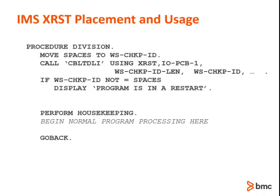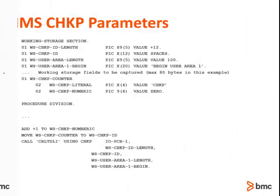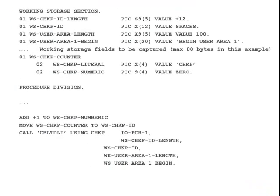A restart is indicated by a non-blank value in the checkpoint ID. In the example shown here, the program simply puts out a message when the XRST call returns a non-blank value in WS Checkpoint ID. Now let's look at the COBOL coding example for a checkpoint call. The checkpoint ID is assigned by the program and typically consists of a literal concatenated to a numeric counter. In this example, the first checkpoint ID would be checkpoint0001, while the next would be checkpoint0002.